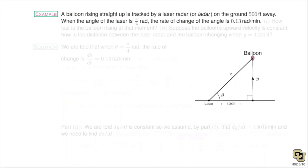Here's a related rates problem. For me, related rates is really about cataloging the information accurately: what are we given, what are we trying to find, and then find a formula that relates those two things. There's only one related rates problem on the test, so don't worry too much. The picture will be given to you. The problem: a balloon 500 feet away from a LADAR device is rising from the ground and being tracked.